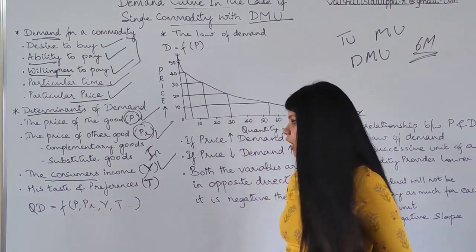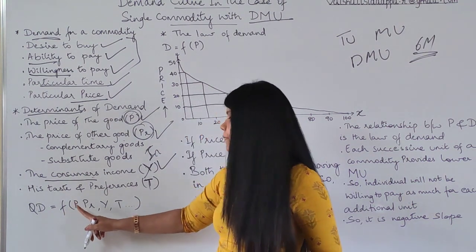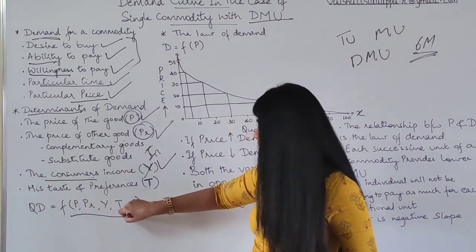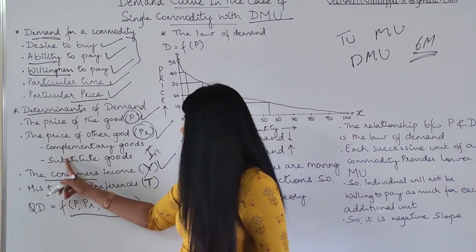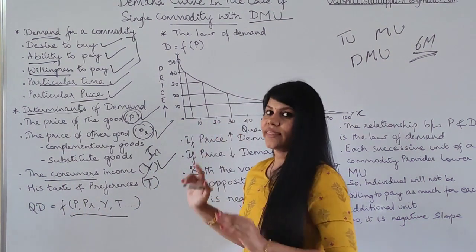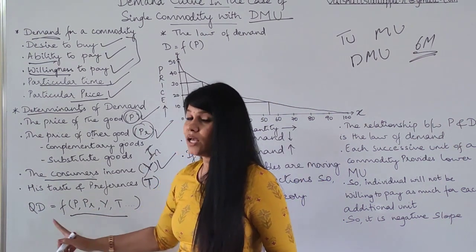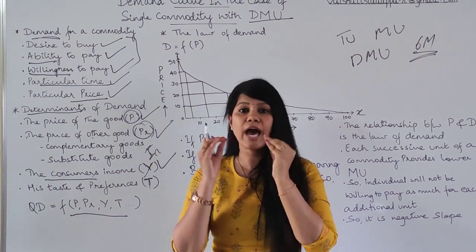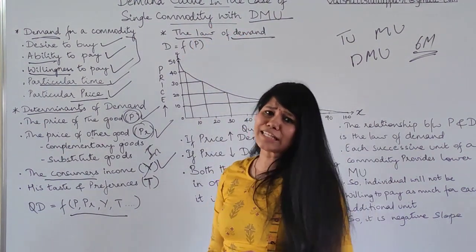The demand function is: QD = f(P, Pr, Y, T). This means the quantity demanded (QD) is a function of price, price of related goods, consumer income, and taste and preferences. These four determinants are the independent variables, and QD is the dependent variable. To analyze whether the relationship between variables is positive or negative, we consider each one individually.